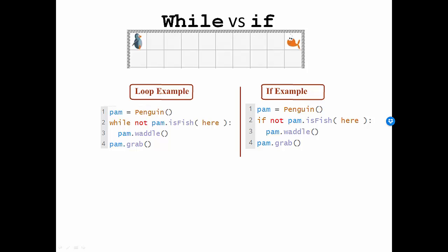However, if you look on the right, you see an if statement, if not pam.isfish here, which is another kind of statement that checks for a condition but will only execute one time.